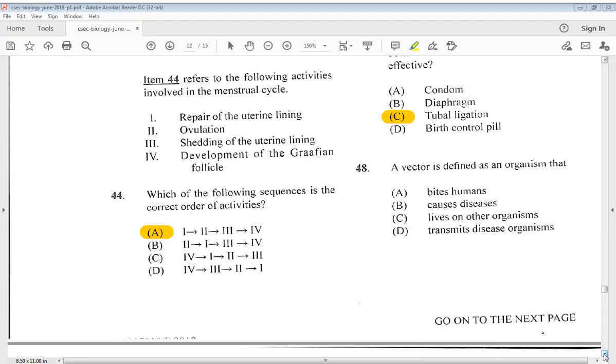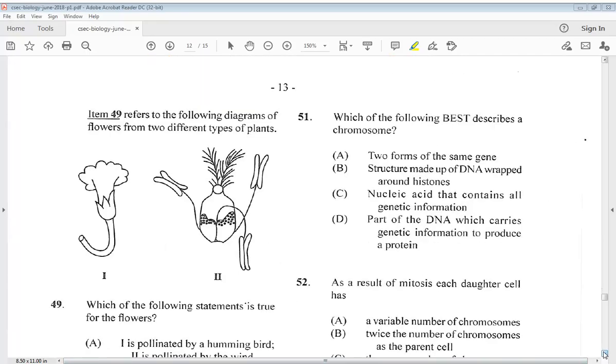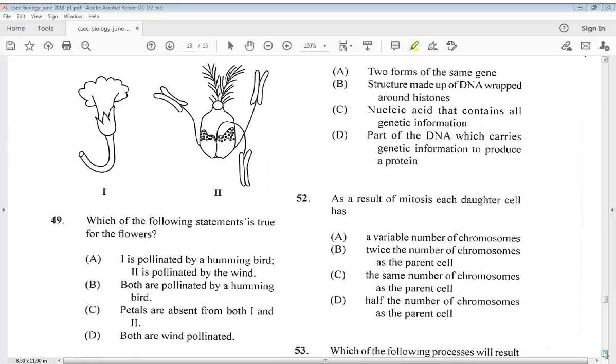Question 48. A vector is defined as an organism that: A. Bites humans. B. Causes diseases. C. Lives on other organisms. Or D. Transmits disease organisms. So that is D. Let's go to number 49. Item 49 refers to the following diagrams of flowers from two different types of plants. We have them labeled 1 and 2. Which of the following statements is true for the flowers? A. One is pollinated by a hummingbird. Two is pollinated by the wind. B. Both are pollinated by a hummingbird. C. Petals are absent from both 1 and 2. D. Both are wind pollinated. So we know the answer is A.